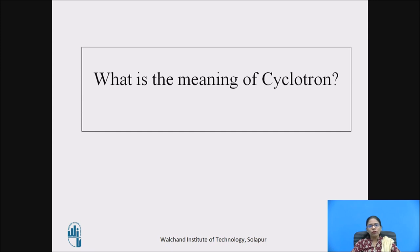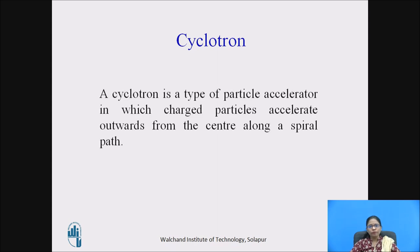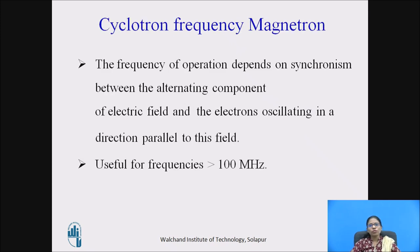What is the meaning of cyclotron? A cyclotron is a type of particle accelerator in which charged particles accelerate outwards from the centre along a spiral path. Cyclotron frequency magnetron: the frequency of operation depends on synchronism between the alternating component of the electric field and electrons oscillating in a direction parallel to this field. It is useful for frequencies greater than 100 MHz.